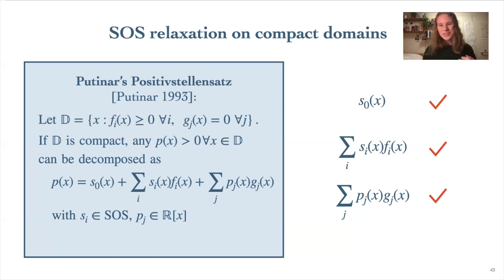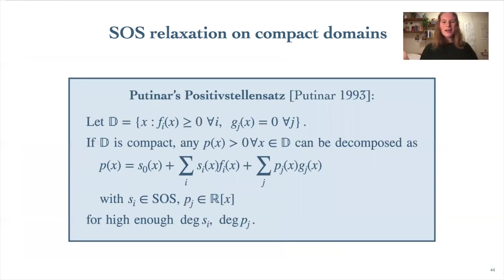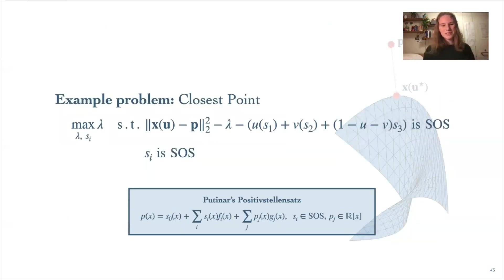So we've determined that any polynomial in this form is in fact positive over our domain, but is every polynomial that is positive over our domain necessarily decomposable in this form? Well, the Positivstellensatz tells us that yes, every positive polynomial is representable in that form, as long as we take the degrees of the s and p polynomials high enough. You'll see later how this arbitrarily high degree requirement is reconciled with a concrete implementation of this theorem.